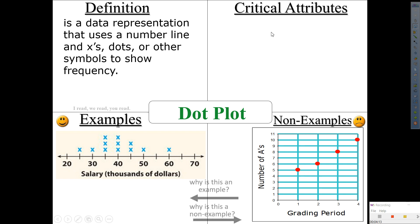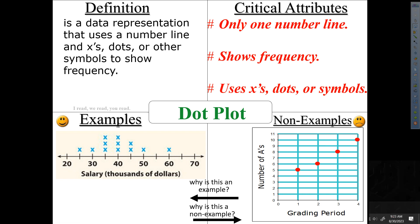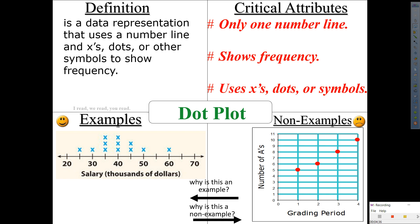So, for the sake of time, here's some hashtags. What makes a dot plot a dot plot? Hashtag only a number line. One number line. Hashtag shows frequency. Yes, it does show frequency. Hashtag uses x dot symbols. All right. Are we good?